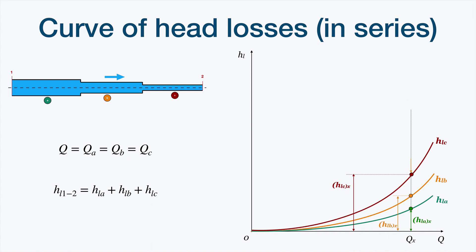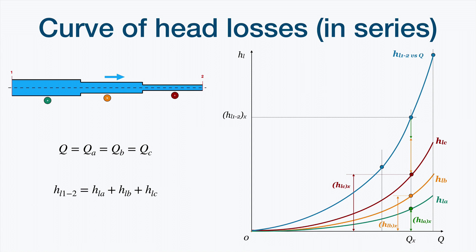Let's add the values starting at the pressure losses for pipe C, then add the value for pipe B, and then the value for pipe A. We will obtain the total pressure losses — the overall pressure losses between section 1 and section 2 — for this value of flow rate QX. We will do the same for another value of flow rate to obtain the overall pressure losses for that value. And the same for yet another value. Finally, we can draw the overall curve of pressure losses between section 1 and section 2.